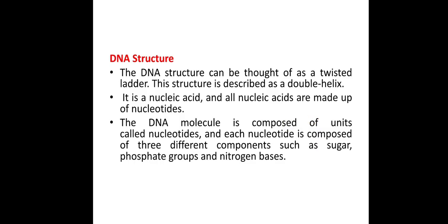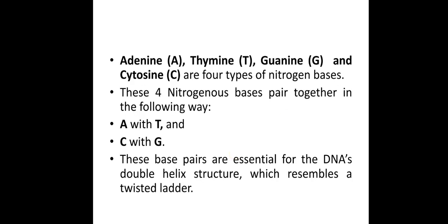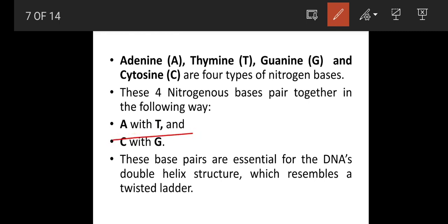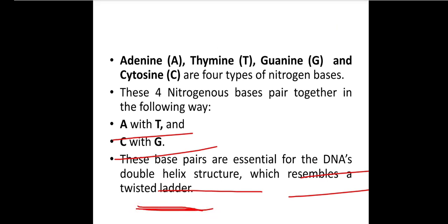The DNA structure can be thought of as a twisted ladder. This structure is described as a double helix. It is a nucleic acid, and all nucleic acids are made up of nucleotides. The DNA molecule is composed of units called nucleotides, and each nucleotide is composed of three different components: a sugar, a phosphate group, and nitrogen bases — adenine, guanine, cytosine, and thymine.